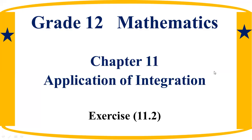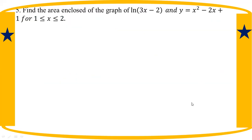Hello everyone, welcome to SSI 11.2, number 5. Let us find the area enclosed by the graphs of ln(3h-2) and y equal to h squared minus 2h plus 1, with lower limit 1 and upper limit 2.